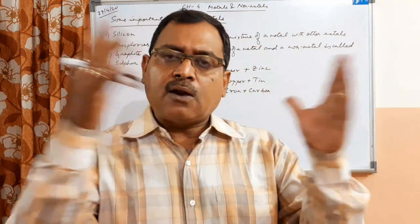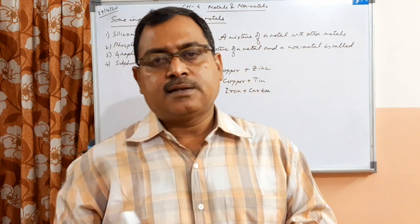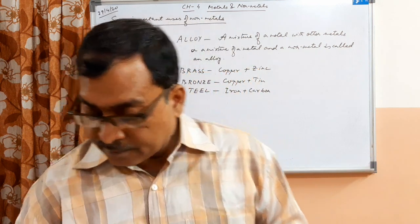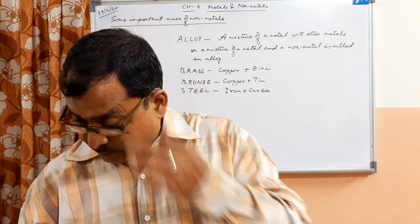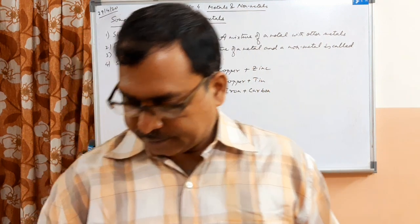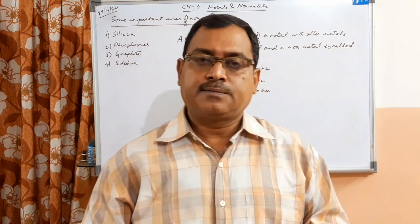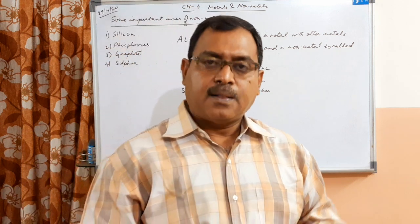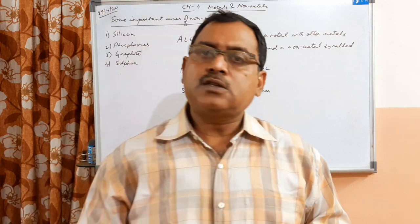Apart from these, many alloys are there which you will get in your book in the form of a chart. Out of these, some important ones are Duralumin and Magnalium. You should try to remember the constituent metals or non-metal of which the alloy is made, the name of the alloy, and at least two uses of each alloy.